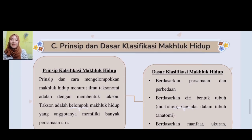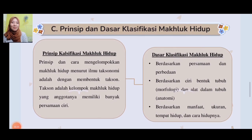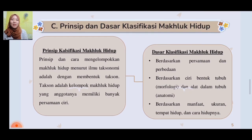Selanjutnya yaitu prinsip dan dasar klasifikasi makhluk hidup. Prinsip dan cara mengelompokkan makhluk hidup menurut ilmu taksonomi adalah dengan membentuk takson. Takson ini adalah kelompok makhluk hidup yang anggotanya memiliki banyak persamaan ciri. Adapun dasar dari klasifikasi makhluk hidup ada tiga, yaitu: yang pertama, berdasarkan persamaan dan perbedaan; yang kedua, berdasarkan ciri bentuk tubuh atau morfologi dan alat dalam tubuh atau anatomi; dan yang ketiga, berdasarkan manfaat, ukuran, tempat hidup, dan cara hidupnya.